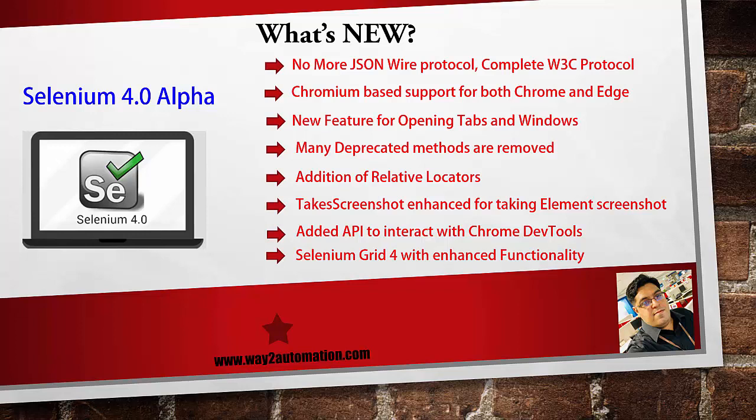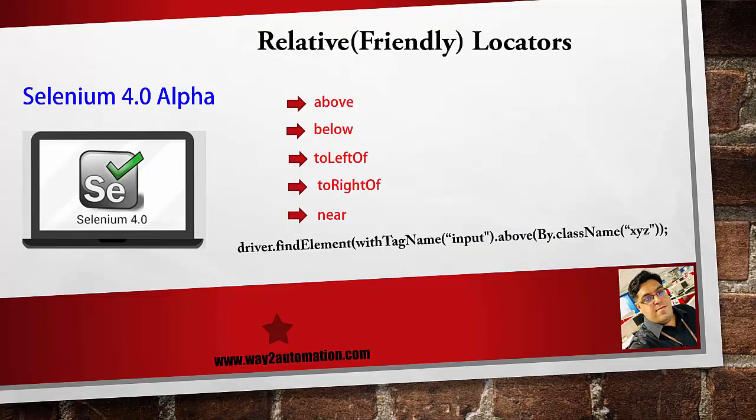Many deprecated methods have been removed from the API and proper documentation has been done based on W3C standards. The next important addition is relative locators — initially named friendly locators and now renamed to relative locators.